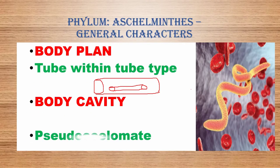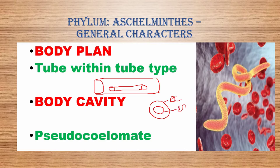The body cavity is pseudocoelomate. In the embryo, between the ectoderm and the endoderm, there is no true mesoderm. Instead, mesodermal pouches are scattered — these round circle-shaped structures are mesodermal pouches. This type of body cavity is termed pseudocoelomate.